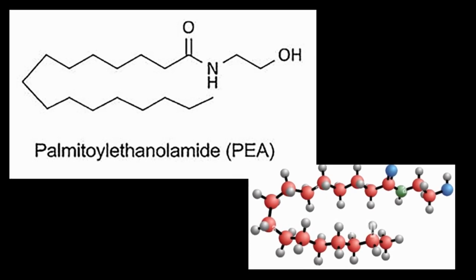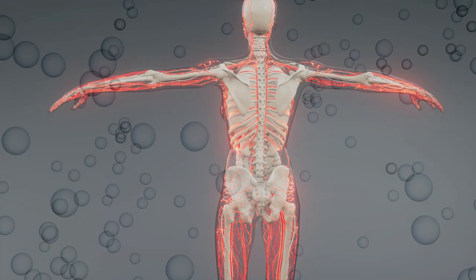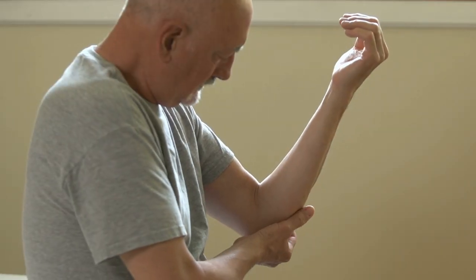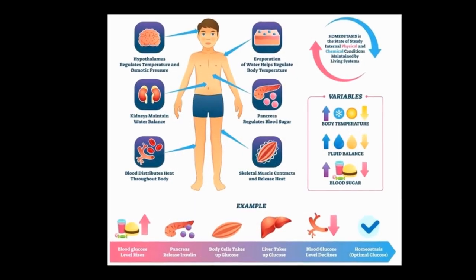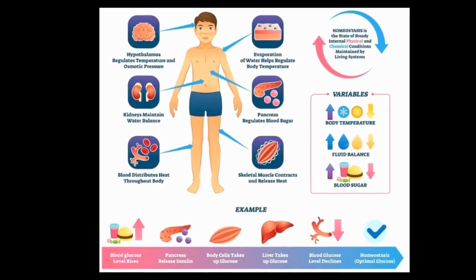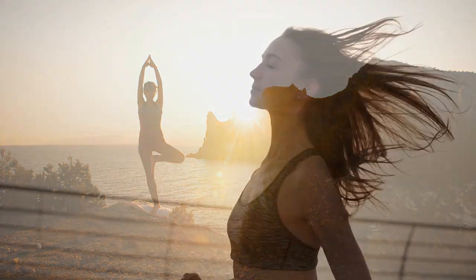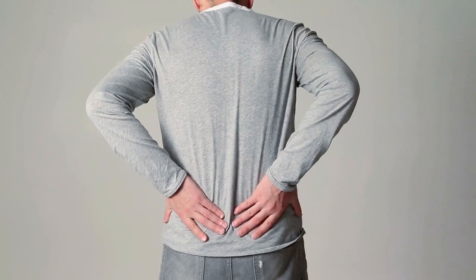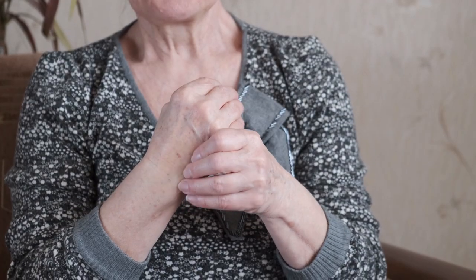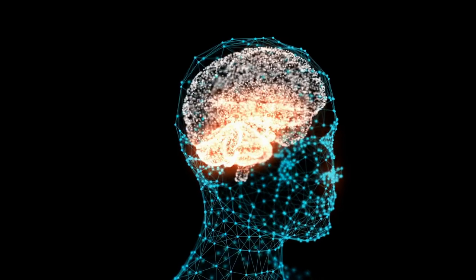Palmitoylethanolamide, PEA, is a fatty acid found naturally throughout the body. It is a natural compound that your body produces in response to various forms of cellular damage. Its primary role is to promote homeostasis — the body's ability to maintain a stable and balanced internal environment for optimal functioning and overall wellness. Its unique ability to target pain and inflammation provides a comprehensive approach to pain management, gut health, and neuroprotection.